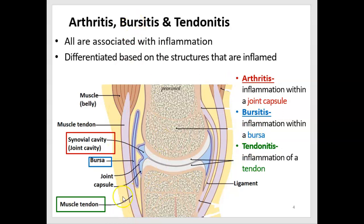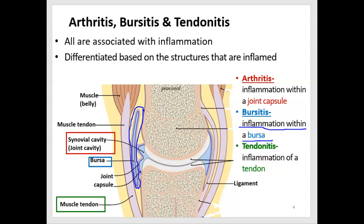There are also protective structures between a tendon and a bone, between two bones, or between the skin and bone, so that moving parts don't scrape against bone. These protective structures are called bursa. In bursitis, the bursa is what becomes inflamed.